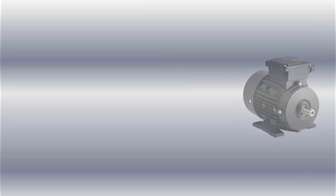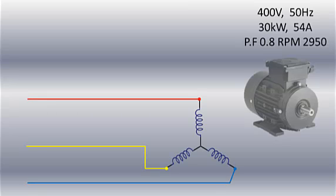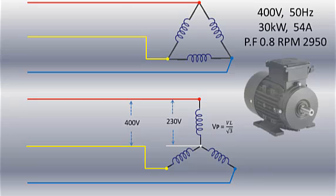Here is a three-phase induction motor with a nameplate rating of 400 volt, 30 kilowatt and 54 ampere when connected in delta. However, if the motor is connected in star configuration, the voltage across each winding will be reduced by a factor of square root 3, about 57 percent compared to the line voltage in delta connection, because in delta, line voltage is equal to the phase voltage.